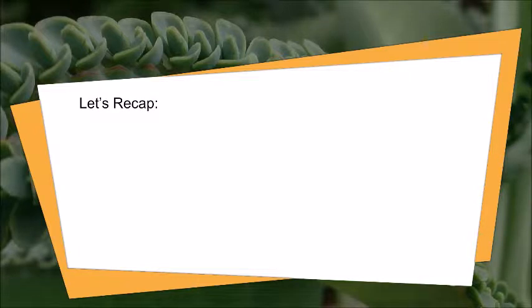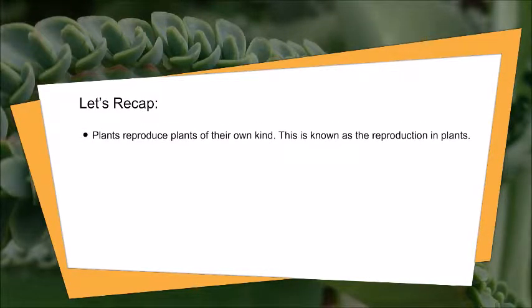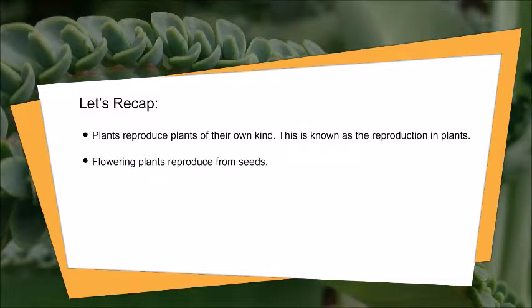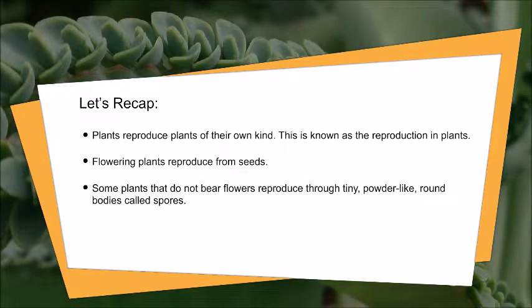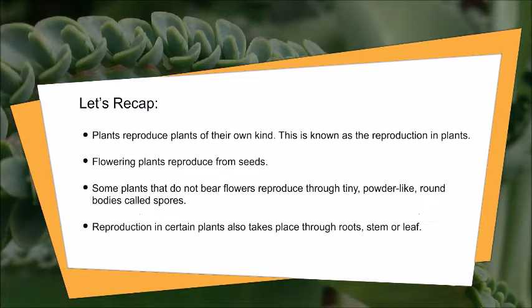Let's recap. Plants reproduce plants of their own kind. This is known as reproduction in plants. Flowering plants reproduce from seeds. Some plants that do not bear flowers reproduce through tiny, powder-like, round bodies called spores. Reproduction in certain plants also takes place through roots, stem, or leaf.